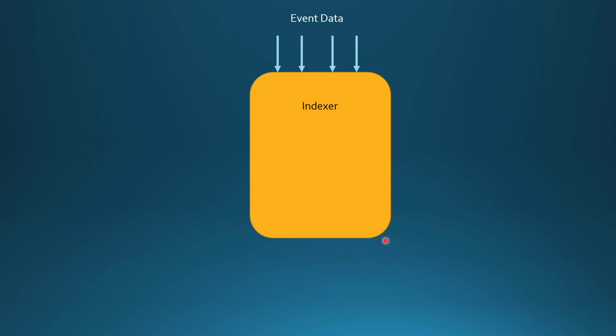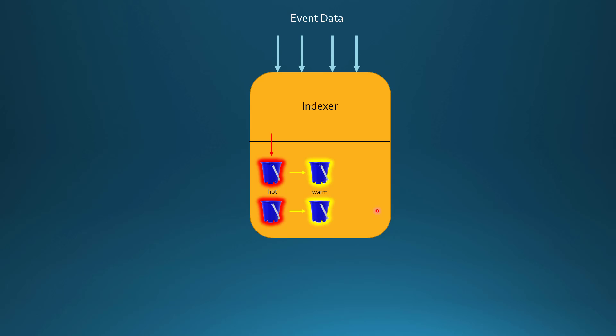Ultimately the data goes to the indexer, and the indexer saves the data locally. While saving, we already know how it saves indexed data: first it creates the hot bucket, then eventually — either by time settings or bucket size settings — the hot bucket rolls to the warm bucket. Then the warm bucket rolls to the cold bucket. Cold data is basically data which is not getting frequently searched, so we can store it in inexpensive storage. That's the whole purpose of these different bucket types Splunk maintains.